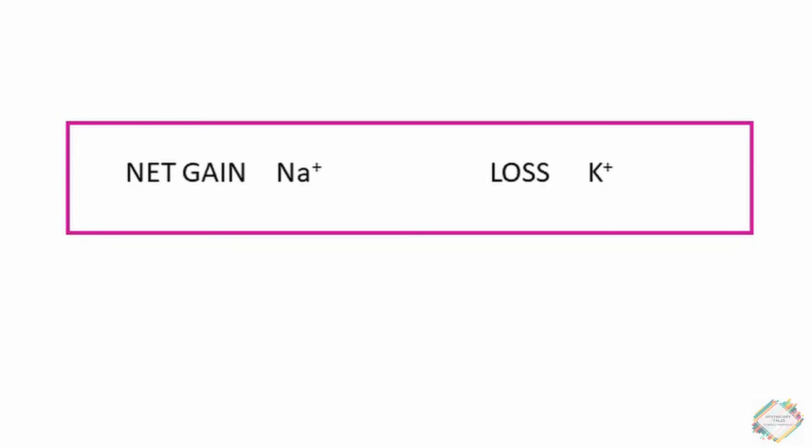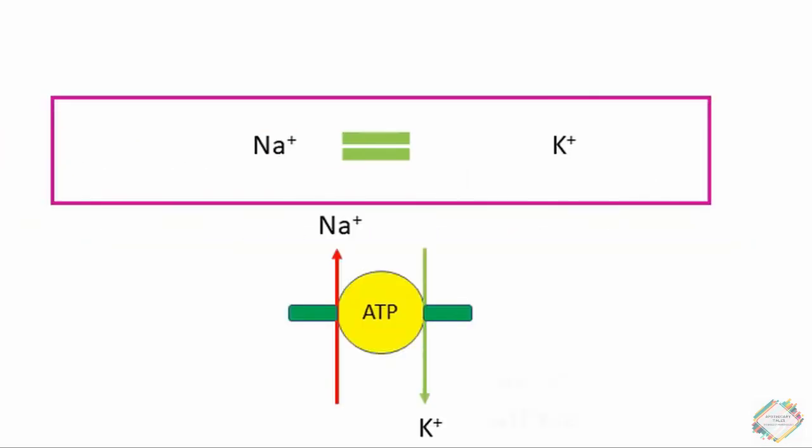This sodium-potassium imbalance is corrected by the sodium-potassium ATPase. The sodium net gain occurs because at the beginning of the action potential there is a fast upstroke during which sodium enters the cell and builds up. At the repolarization stage, there is outward movement of potassium, hence a loss of potassium, corrected by sodium-potassium ATPase.